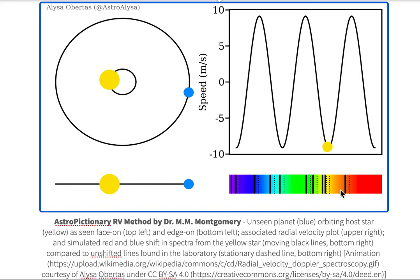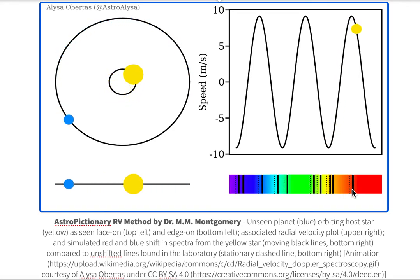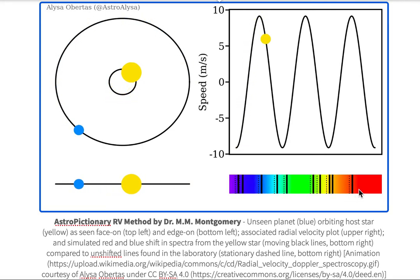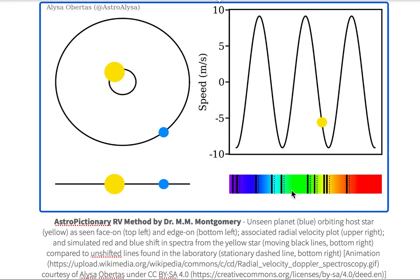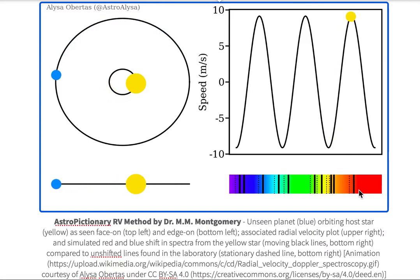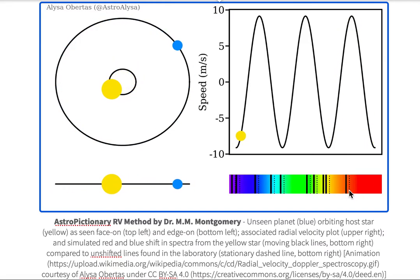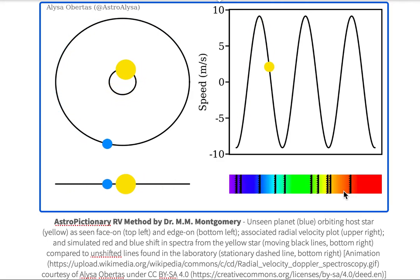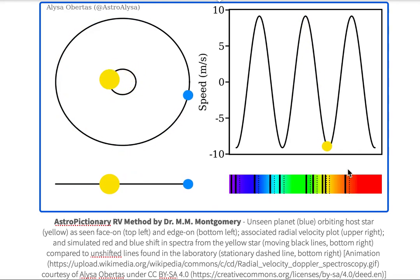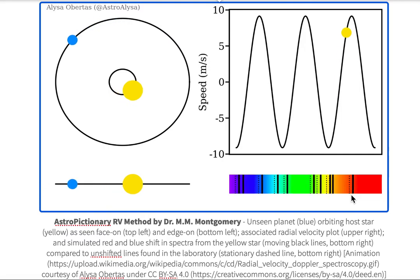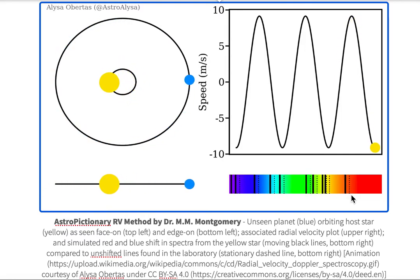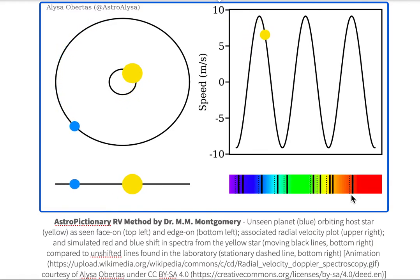What we see from the host star is that the observed spectral line — let's say hydrogen alpha, which I'm pointing to — has this red shift and this blue shift. Notice the line is shifting towards the red side of the spectrum and then it shifts to the blue side of the spectrum. The line has a red shift, a blue shift, and it keeps repeating. Because we see these shifting lines around the one line in the laboratory, we know that there must be something tugging on this star to make it wobble in the sky.